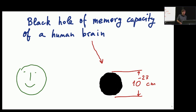Black holes are really extremely interesting objects because they are essentially the most compact storage of quantum information. With my very rough estimate, a black hole with the capacity of a human brain has the size of 10 to the minus 27 centimeters, and so that's very compact.